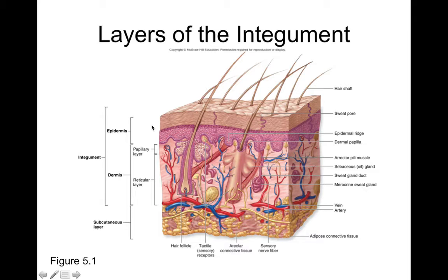Deep to the epidermis is the dermis, which has two major layers: the papillary layer and the reticular layer of dermis. The papillary layer is this peg-shaped or nipple-shaped layer full of loose areolar connective tissue. Loose areolar had a lot of ground substance — very little fibers, but that ground substance was nourishing. We also have capillary loops within this papillary layer that allow nutrients to diffuse out of your bloodstream, dissolve within the ground substance, and nourish the epidermis from the underside.